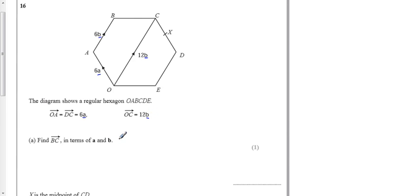Find BC in terms of a and b. So I want to get from B to C in terms of a and b. Well, I may have used the directions given, b's and a's. So let's try that in full. If I go backwards down here, I go backwards down there, backwards down there, but forwards up there.